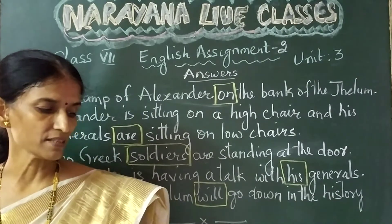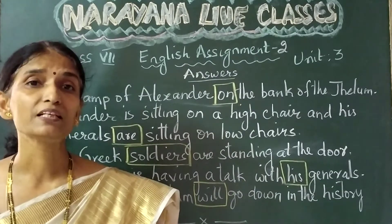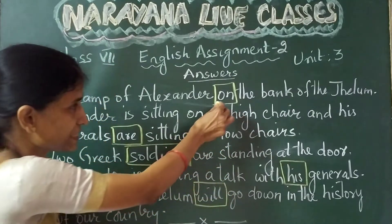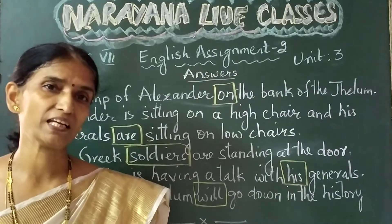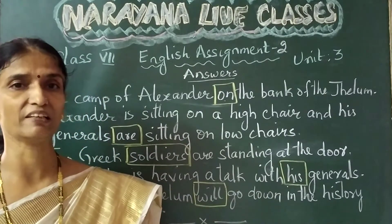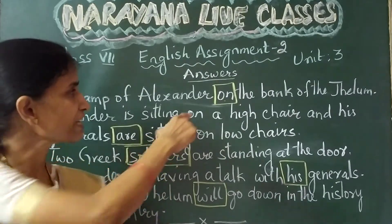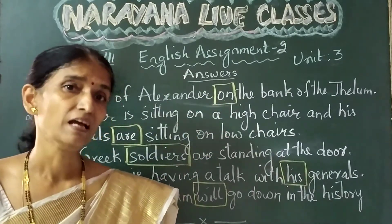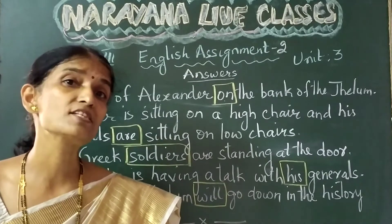The first sentence is: 'The camp of Alexander in the banks of the Jelem.' The mistake is at the preposition. We always say 'on the bank of the river,' not 'in the bank of the river.' So an inappropriate preposition is used. We replace 'in' with 'on.' The corrected sentence is: 'The camp of Alexander on the bank of the Jelem.'